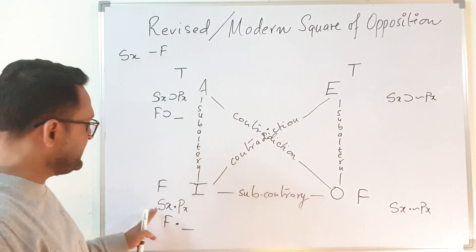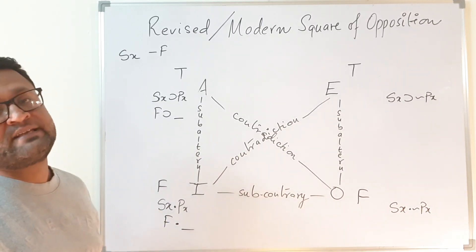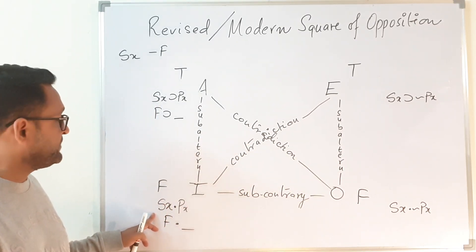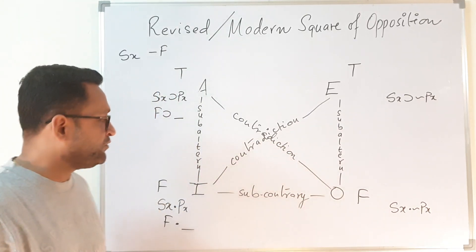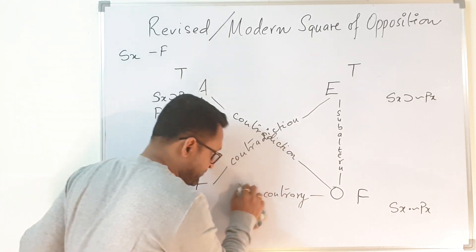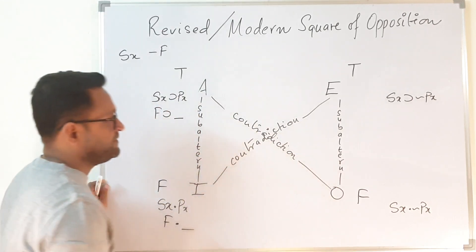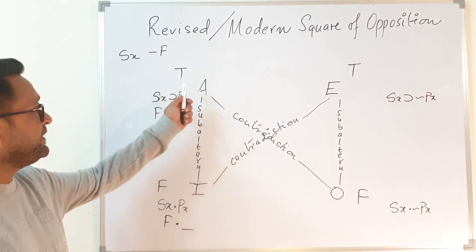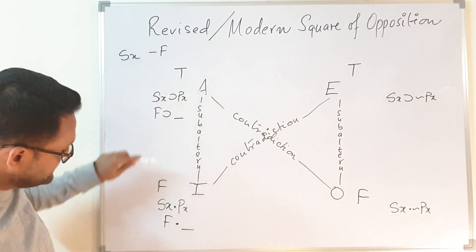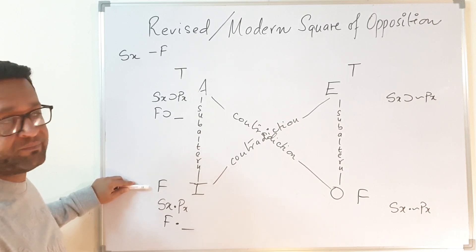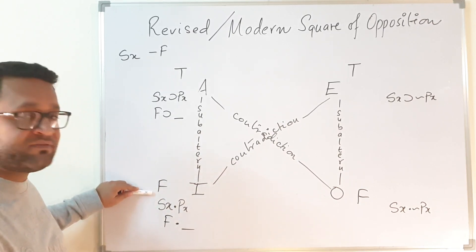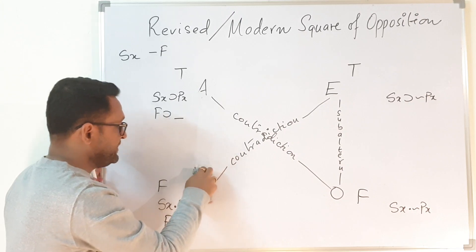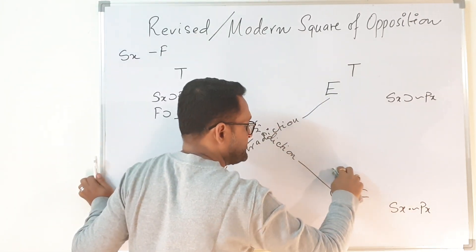Now consider the subcontrary relationship: I and O cannot be false together. But when Sx is false, both I and O become false — so I and O can be false together, meaning the relationship of subcontrary is also gone. Furthermore, the subaltern relationship requires that if the superaltern is true then the subaltern must be true, and if the subaltern is false then the superaltern must be false. These relationships also do not hold, so subalternation is gone as well.